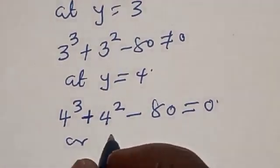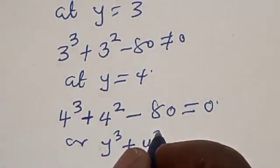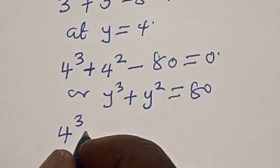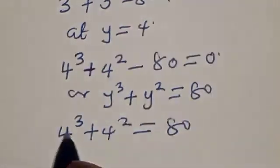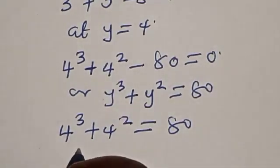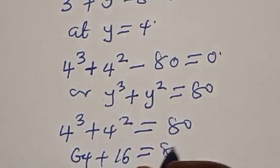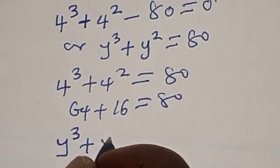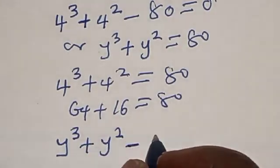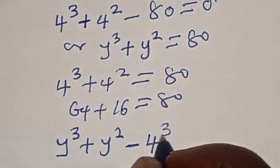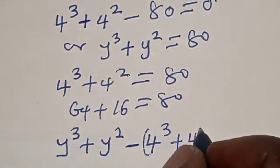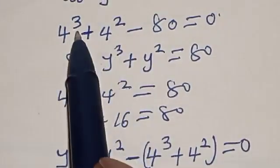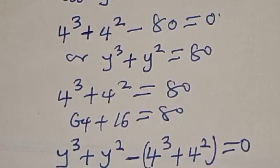We want to verify: y^3 + y^2 = 80. We have 4 raised to power 3 plus 4 squared is equal to 80, because 4 cubed is 64 and 4 squared is 16, giving 80. So our equation becomes: y^3 + y^2 minus (4^3 + 4^2) equals zero, because 4^3 + 4^2 equals 80. We have: y^3 + y^2 minus 4^3 minus 4^2 equals zero.